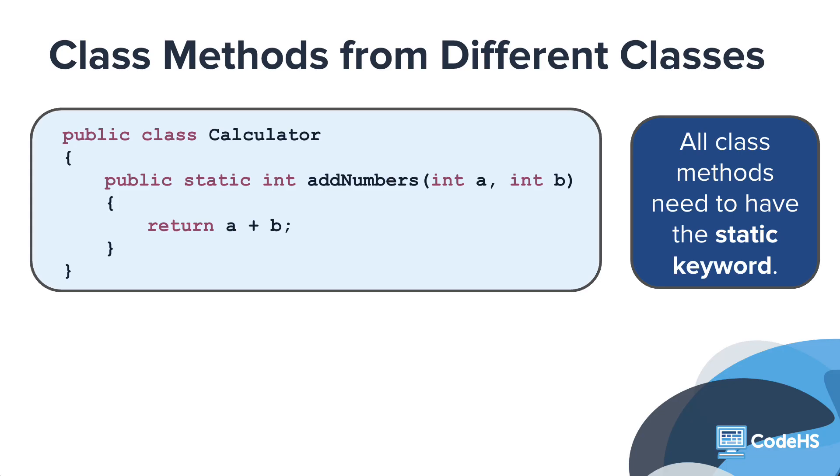Imagine you have a new class called Calculator, and you put your class method AddNumbers in it. Notice that the method signature hasn't changed. It still has the static keyword in it. All class methods, no matter what class they are in, need to have the static keyword.